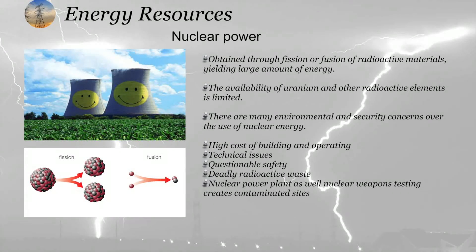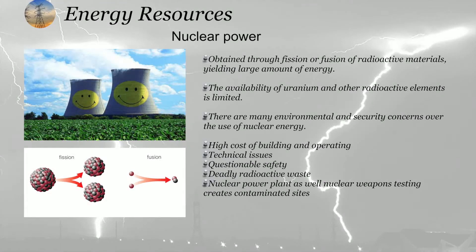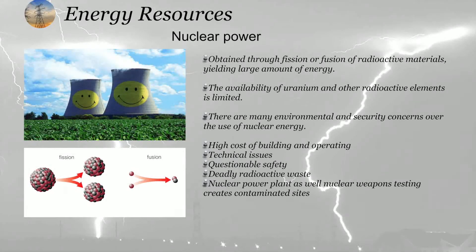Both fusion and fission produce a huge amount of energy in the form of heat. That heat is utilized to boil water, which is converted into steam. This steam is used to rotate turbines and then produce electricity. The energy is obtained through fission of radioactive materials, releasing a large amount of energy.